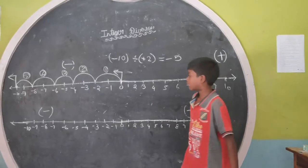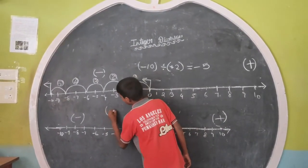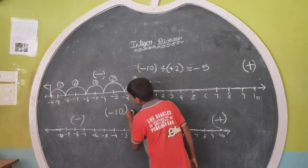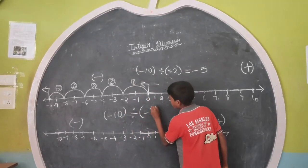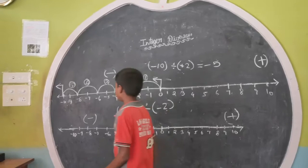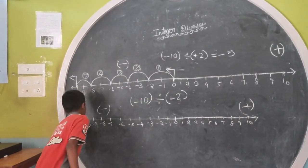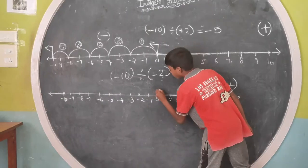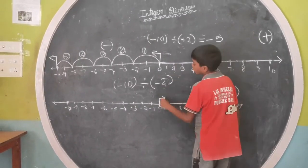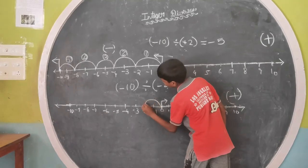The second question is minus 10 divided by minus 2. First, we put a point on minus 10. Move backward. The 2 is just 2, 2 steps.